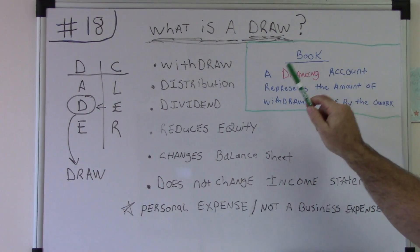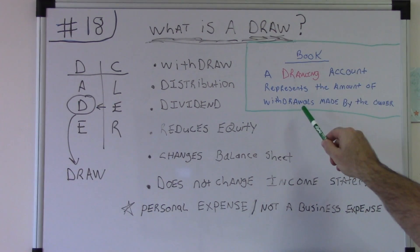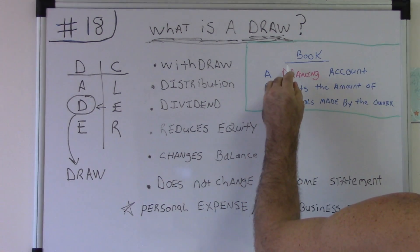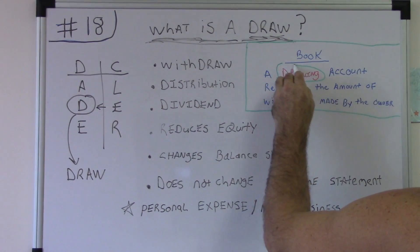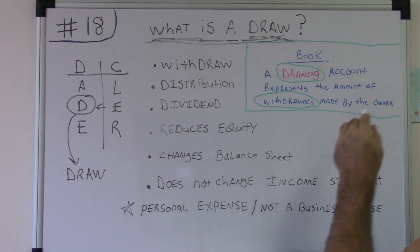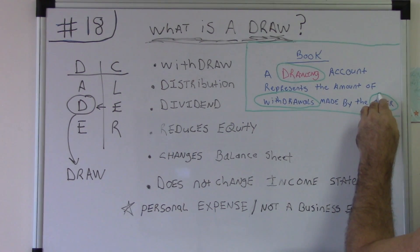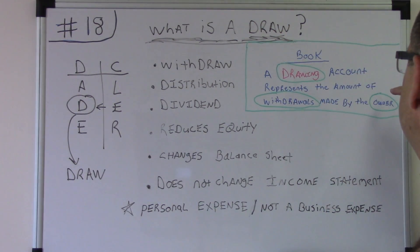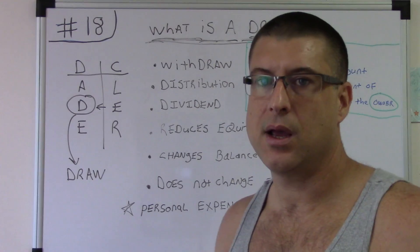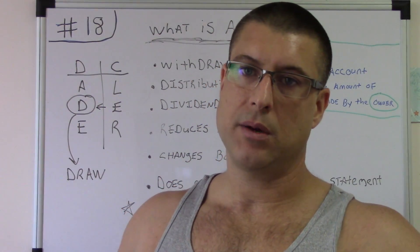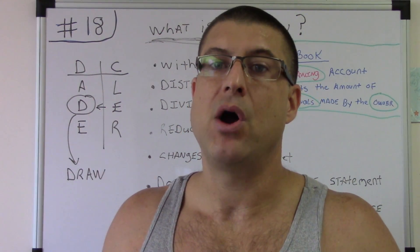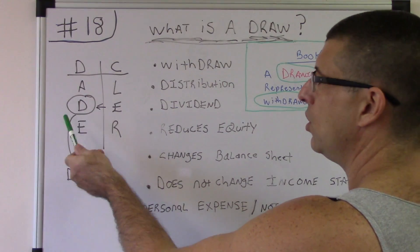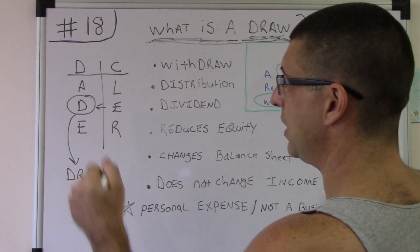Even in the book definition, a draw is the amount of withdrawals made by the owner. So draw is synonymous with withdrawal, and it's by the owner — so it lessens the owner's equity. I always get questions on what a draw is because it's one of the components of DC ALER. What is the draw? It's a positive debit — it goes up on the debit side.